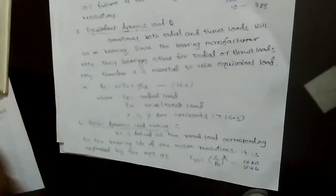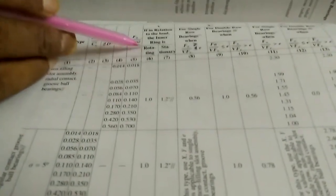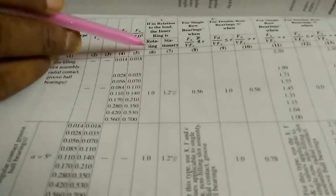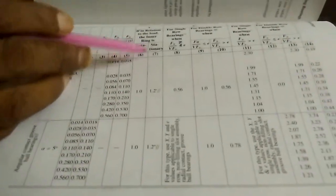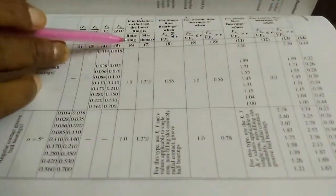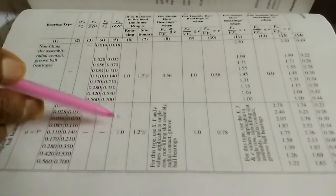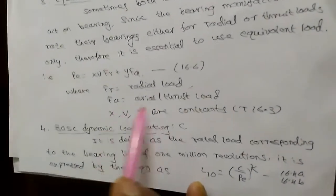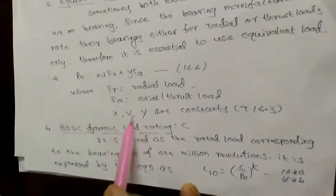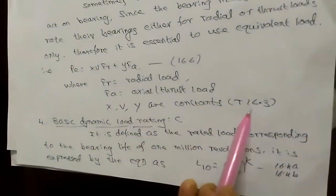V is a rotational factor — when the inner ring rotates, V is always 1. If the bearing is stationary, V takes a different value. FR is the radial load, FA is the axial or thrust load, and X and Y are obtained from the table. When supporting a rotating shaft, V is always 1.